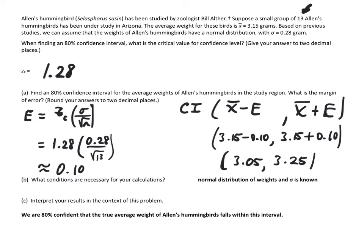What conditions are necessary for your calculations? We were told the weights are normally distributed, and we are given sigma, the population standard deviation. If our sample size is 30 or more, we can use central limit theorem as justification, but we only had a sample size of 13. Part C: interpret your results. We are 80% confident that the true average weight of Allen's hummingbirds falls within this interval.